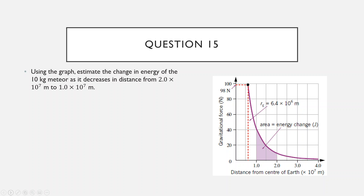So let's do this question. Using the graph, estimate the change in energy of the 10 kilogram meteor as it decreases in distance from 2×10⁷ meters to 1×10⁷ meters — basically this purpley shaded area. Change in energy equals the area under a force versus distance graph. I'm going to split it up into three shapes: this rectangle here, I'm going to approximate that part as a triangle, and then I'm going to approximate that part as a trapezium. So we've got three areas to work out.